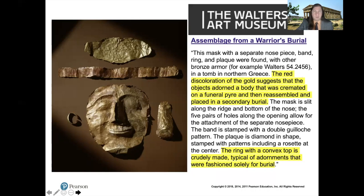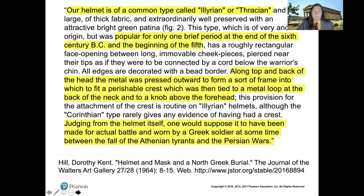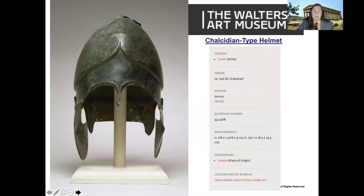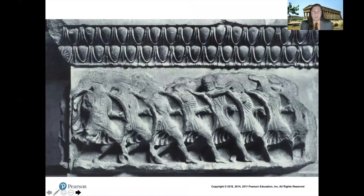This is a reconstruction of what all the burial elements would have looked like together. A later helmet type is the Chalcidian, which has a nose guard and hinged cheeks. Helmets were the private property of soldiers — getting your helmet and shield was custom-made and marked your passage into manhood. These were worn by infantry called hoplites who advanced together in a formation called a phalanx, linking their shields and inserting spears through the gaps.